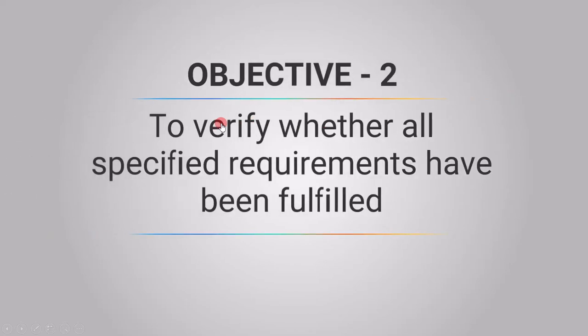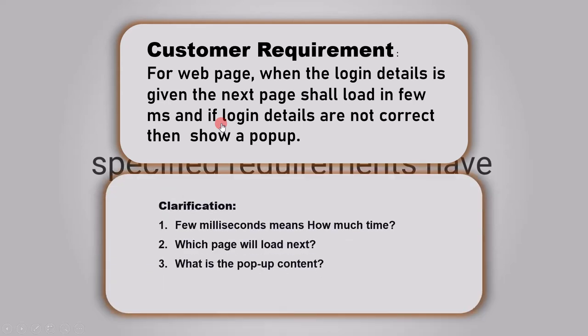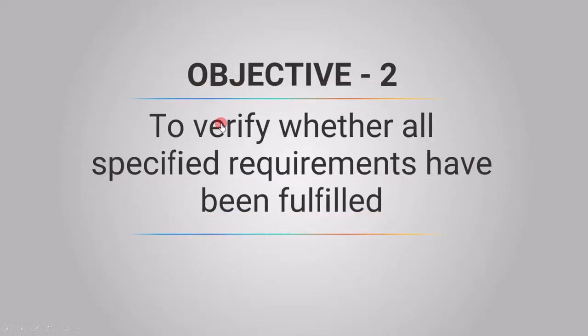The second objective states to verify whether all specified requirements have been fulfilled. For example, suppose the customer requirement for a webpage states that when login details are given, the next page should load in a few milliseconds, and if login details are not correct, show a pop-up. This requirement has open points: how many milliseconds, which page loads next, and what is the pop-up content? In each stage, we have to verify whether all specified requirements have been fulfilled.